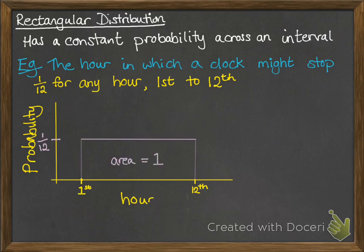Now you should know already that the area under a curve for a probability density function always gives you 1, because the total for probabilities have to add up to 1. Anything outside of this rectangle would have a probability of 0. It can't stop anywhere outside of the 1st to the 12th hour on a clock.